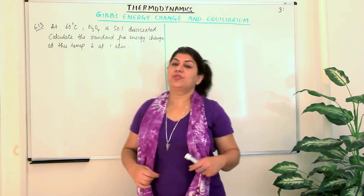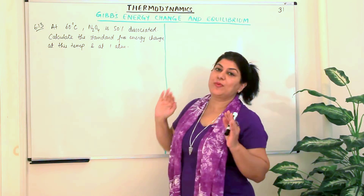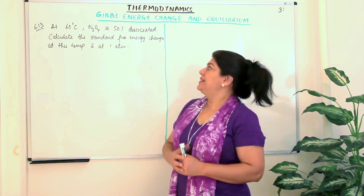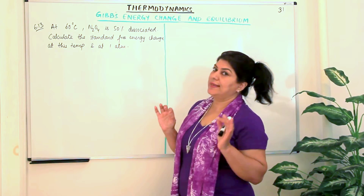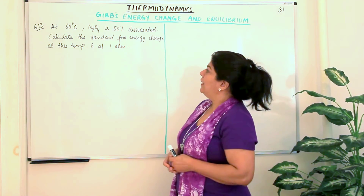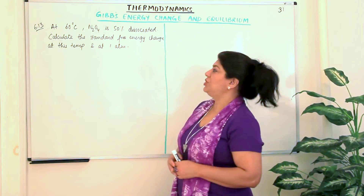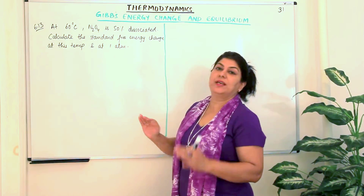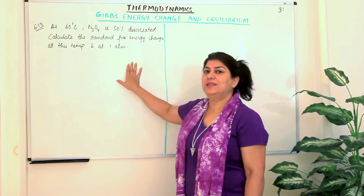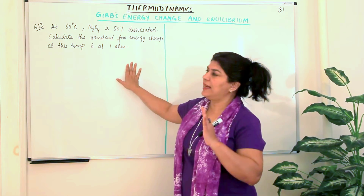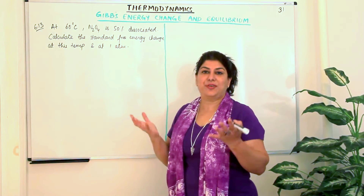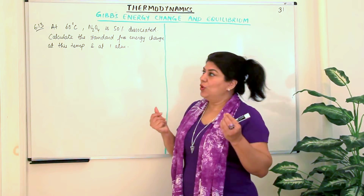There is one more solved example with one more step involved. This is question 6.13. At 60 degrees Celsius, dinitrogen tetroxide (N₂O₄) is 50% dissociated. Calculate the standard free energy change at this temperature and at one atmosphere. Very little information is given, but actually it contains all the information required. The one atmosphere tells you the total pressure.